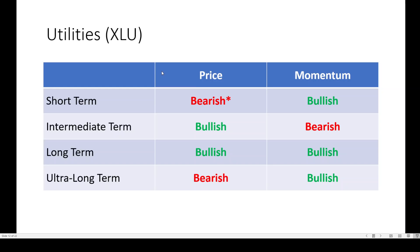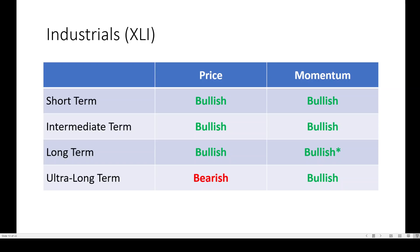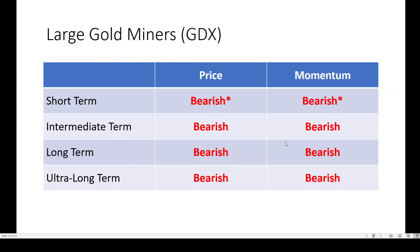Utilities, once almost all green across the board, now see a little bit of bearish signal on the short term — not a major change. There's not a lot of major changes in the charts today. How about industrials? Equities are back near their all-time highs. Industrials are nearly green across the board. Everybody is super bullish on the U.S. economy.